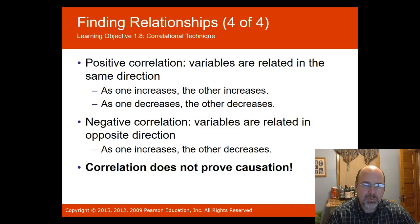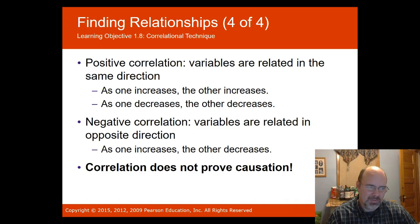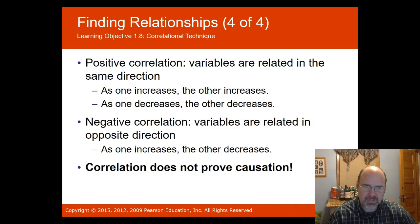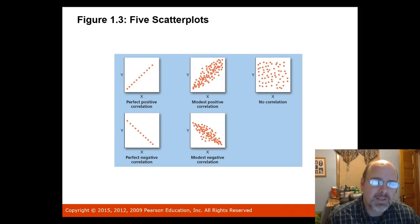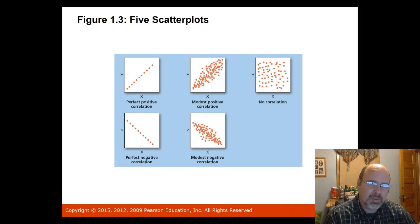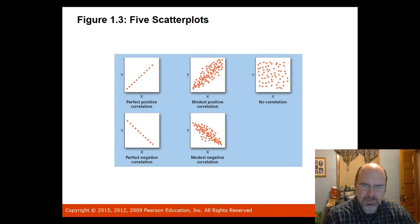Sometimes there are spurious or other reasons that may be causing an apparent correlation. Scatter plots can illustrate a perfect positive correlation, a modest correlation, or no correlation at all.